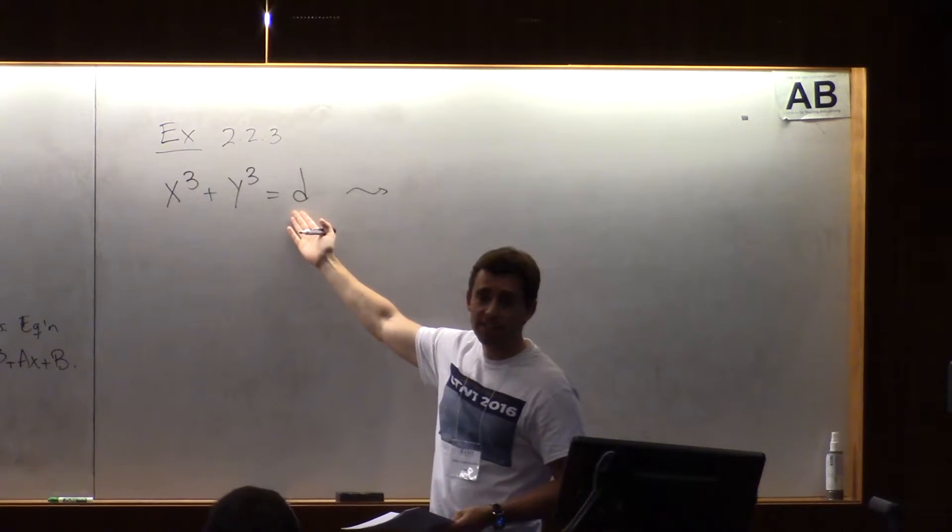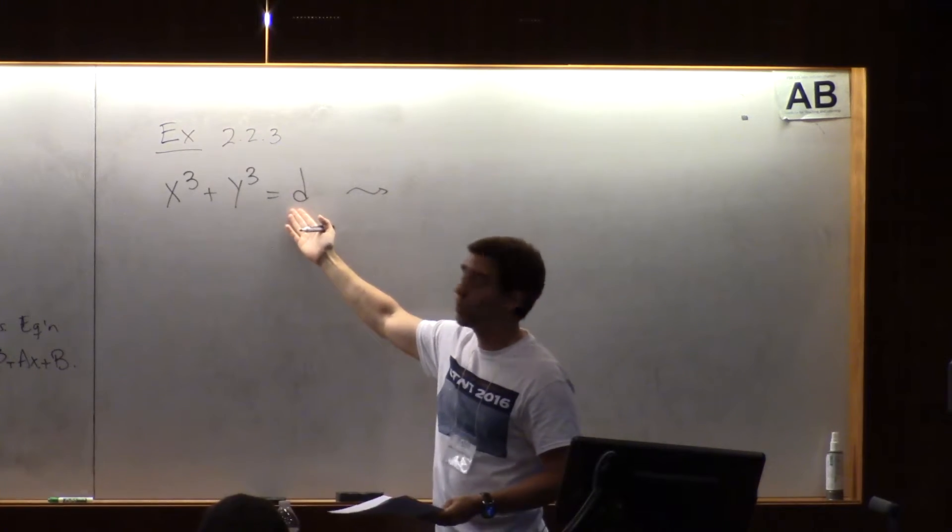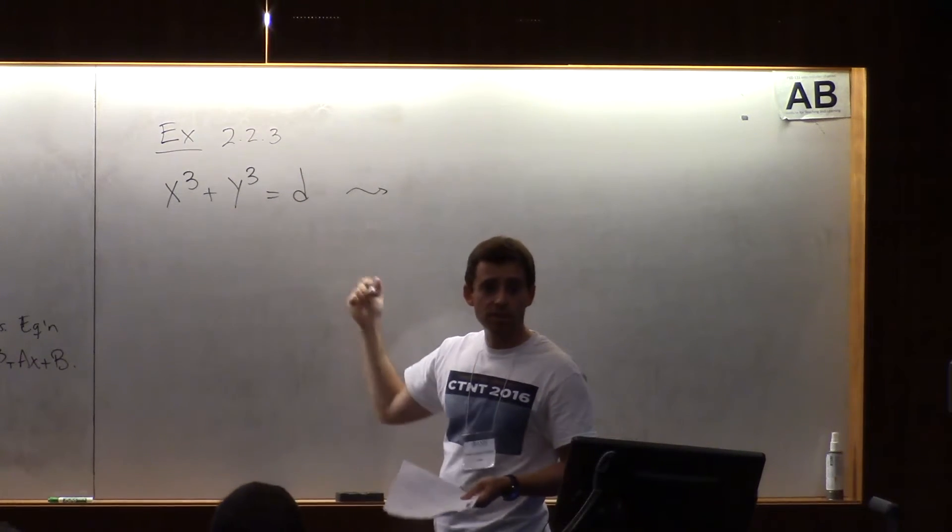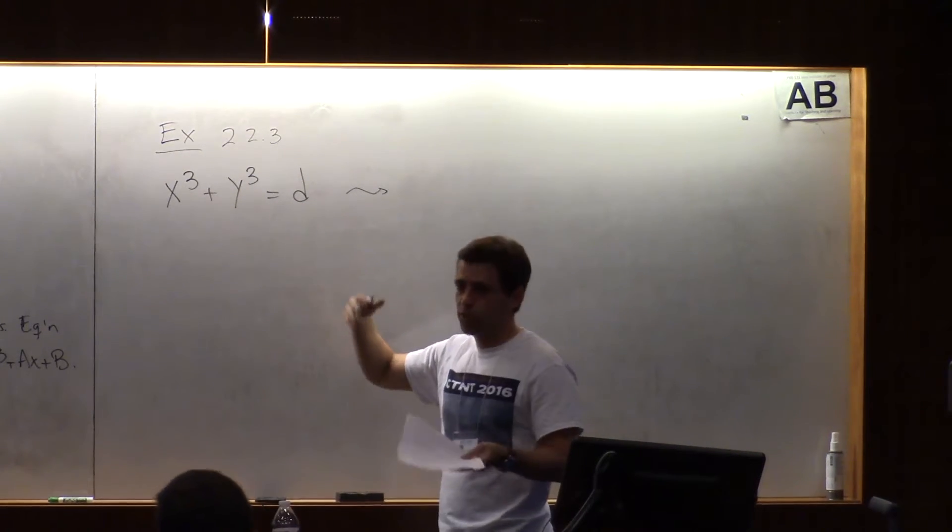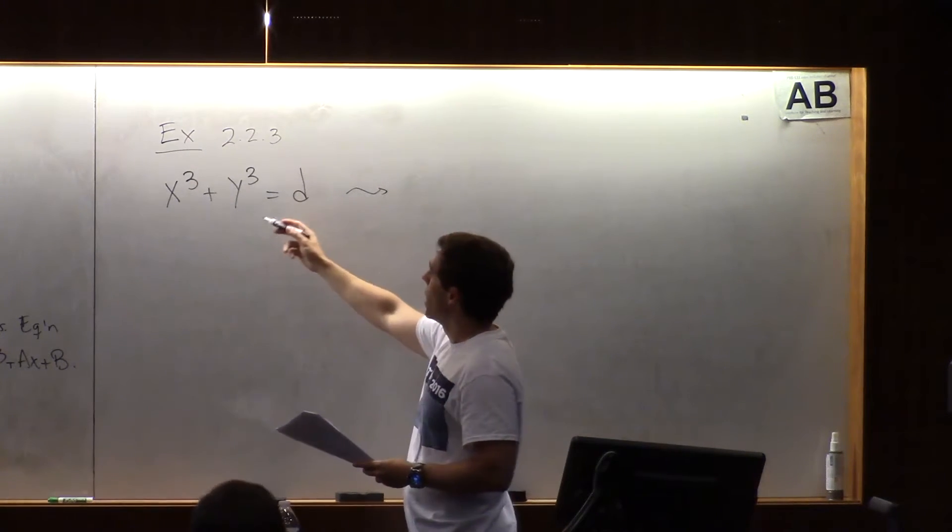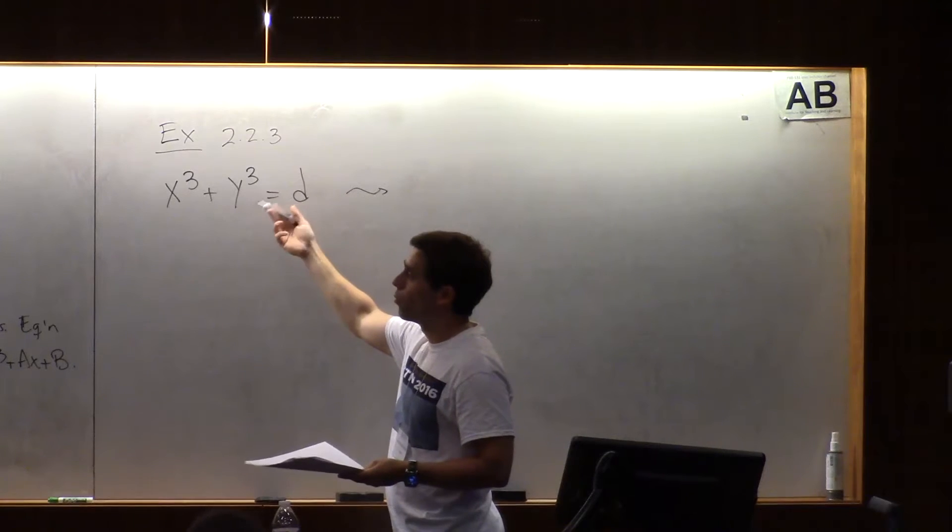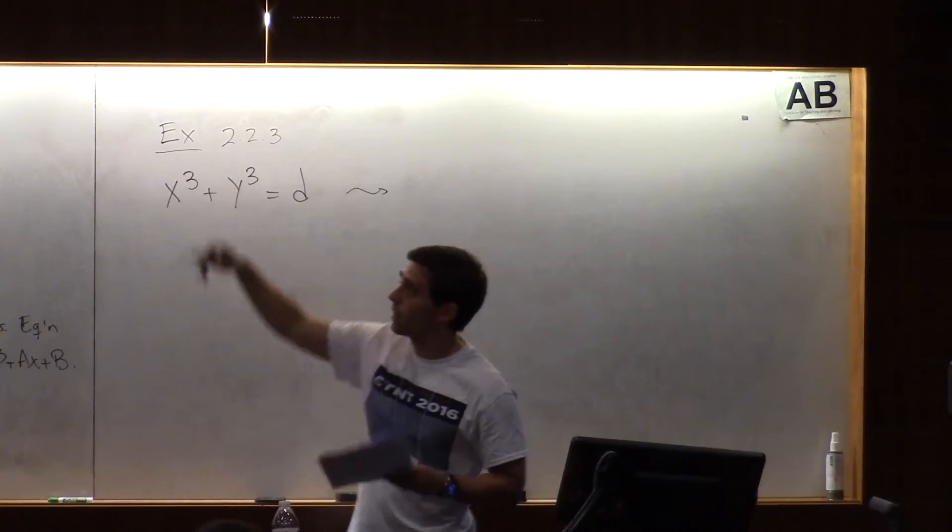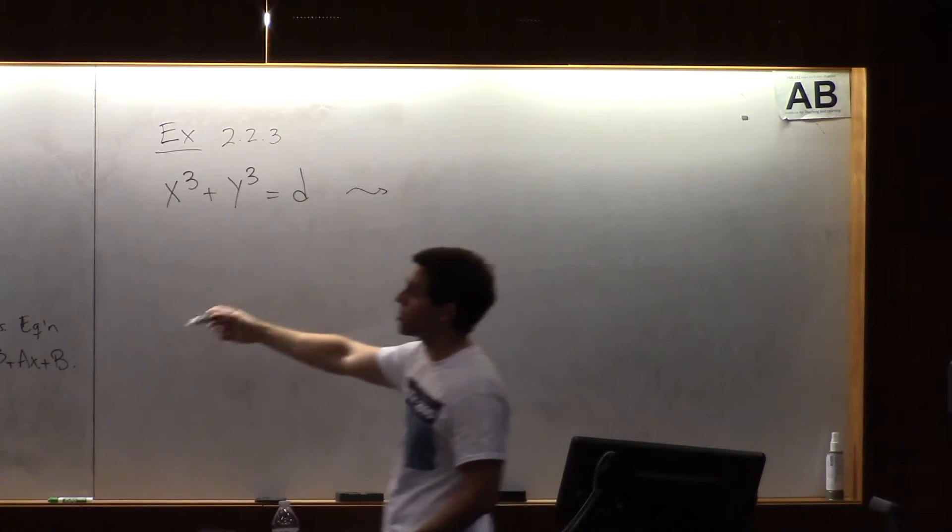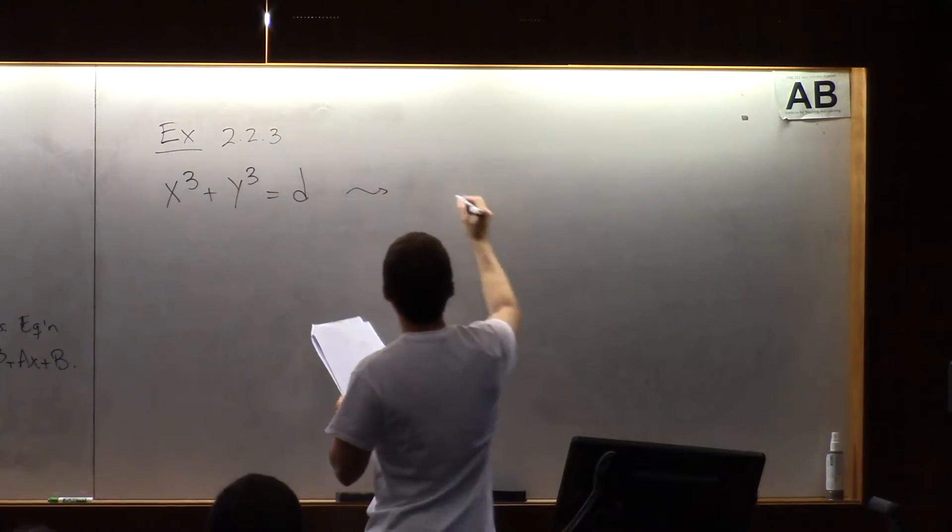So the famous taxicab numbers, for instance, you can put 1729 in there, and try to find out what are the integral points in there. And Ramanujan would say, you know that. Well, so, but we actually, all the software is better suited to work with short Weierstrass equations. So how do you do that?